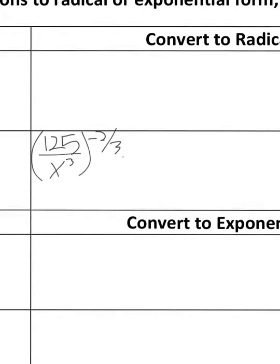How do I take care of the negative 2/3? If you have a negative 2/3 being applied to both parts, then if you flip that fraction, it becomes a positive 2/3. So x^3 over 125 raised to the 2/3 power is the appropriate exponential form.